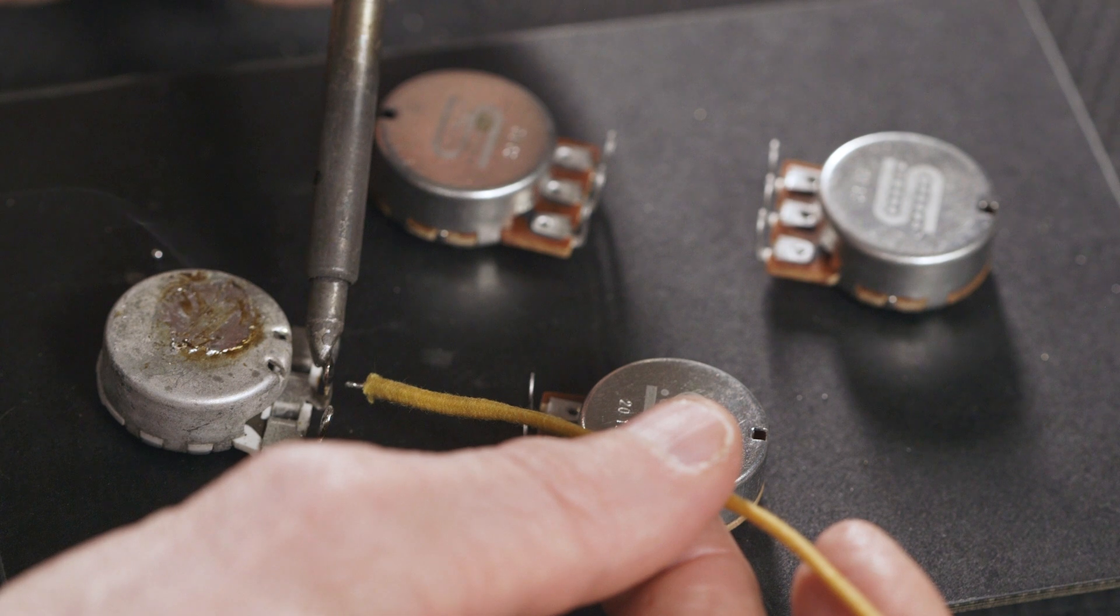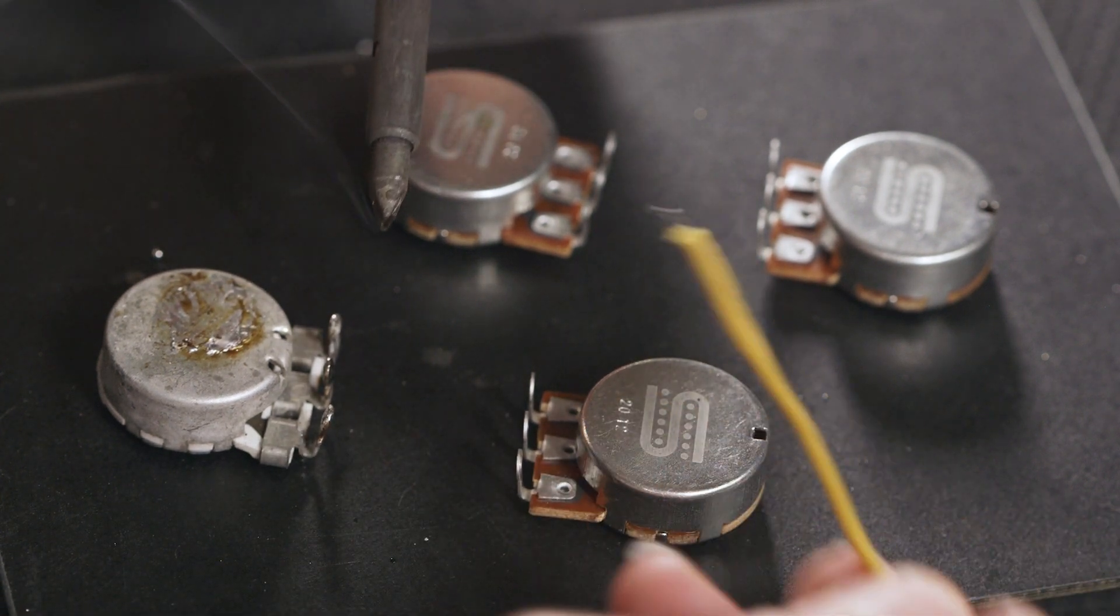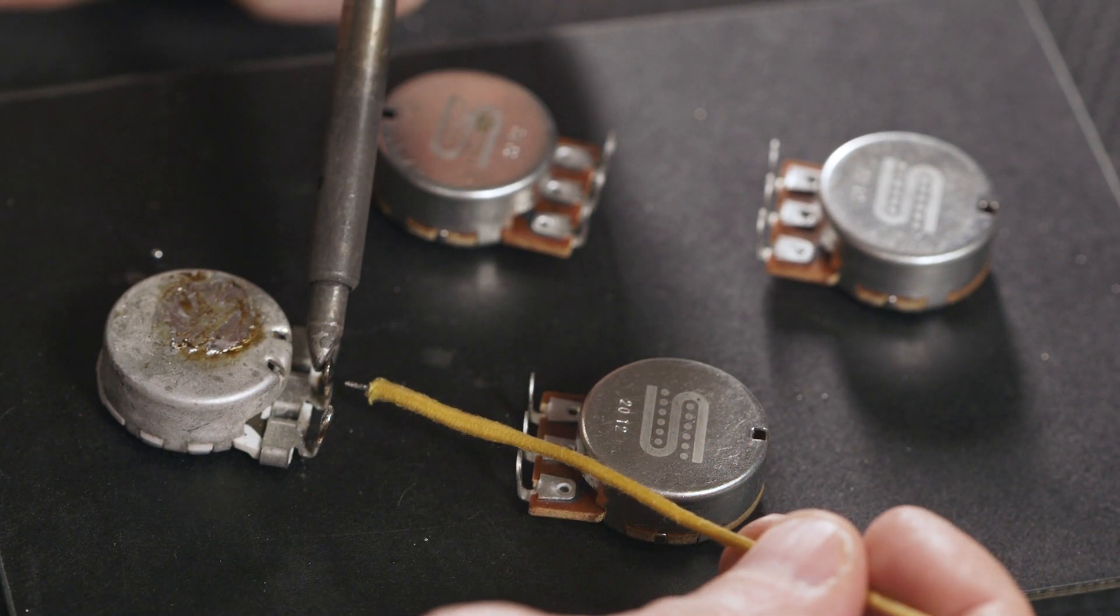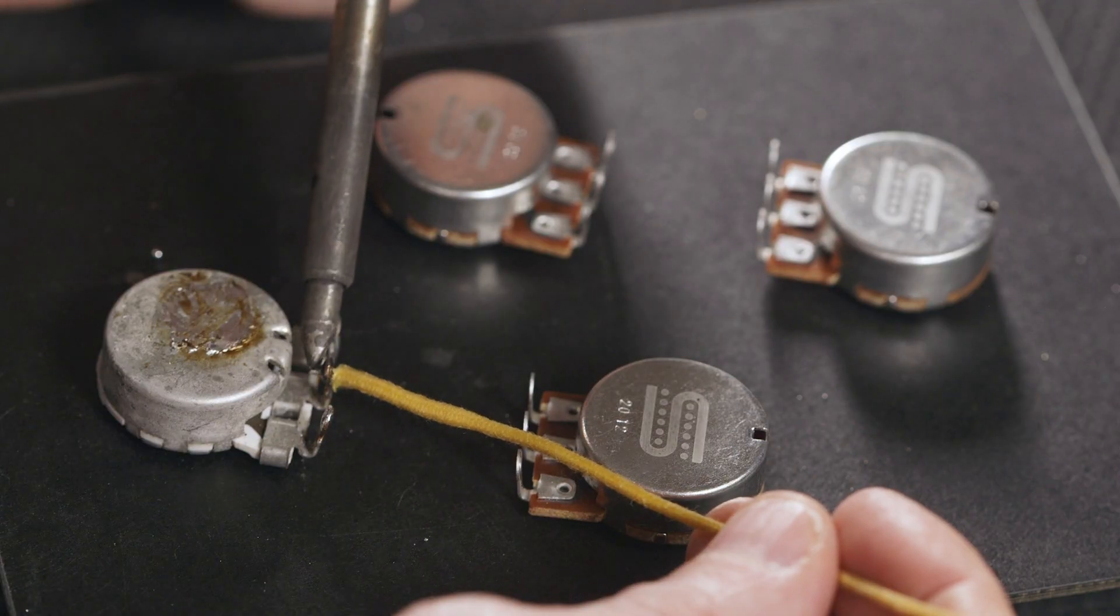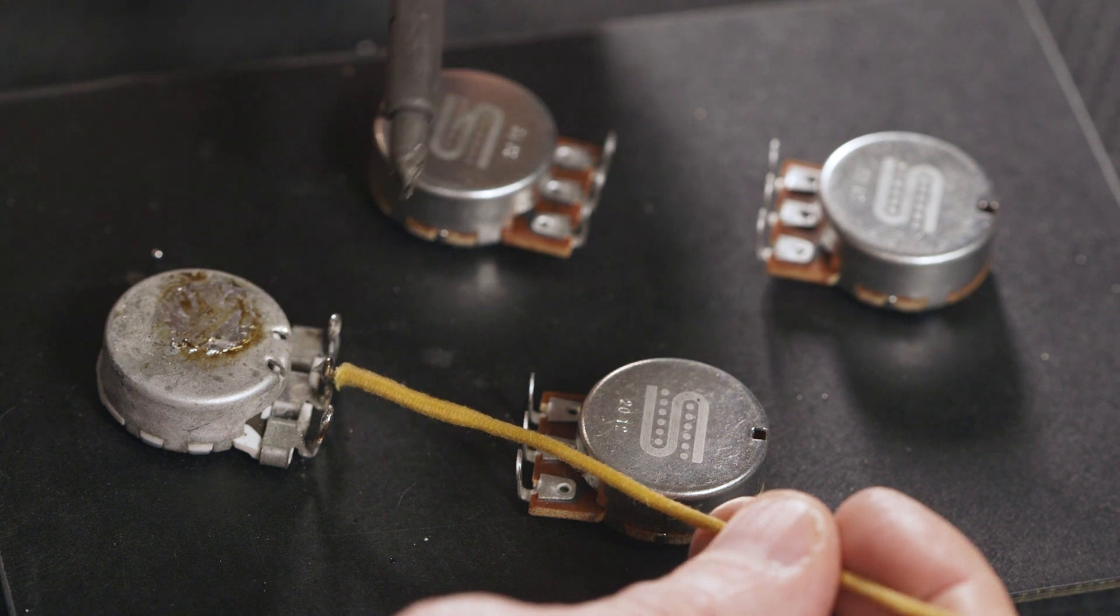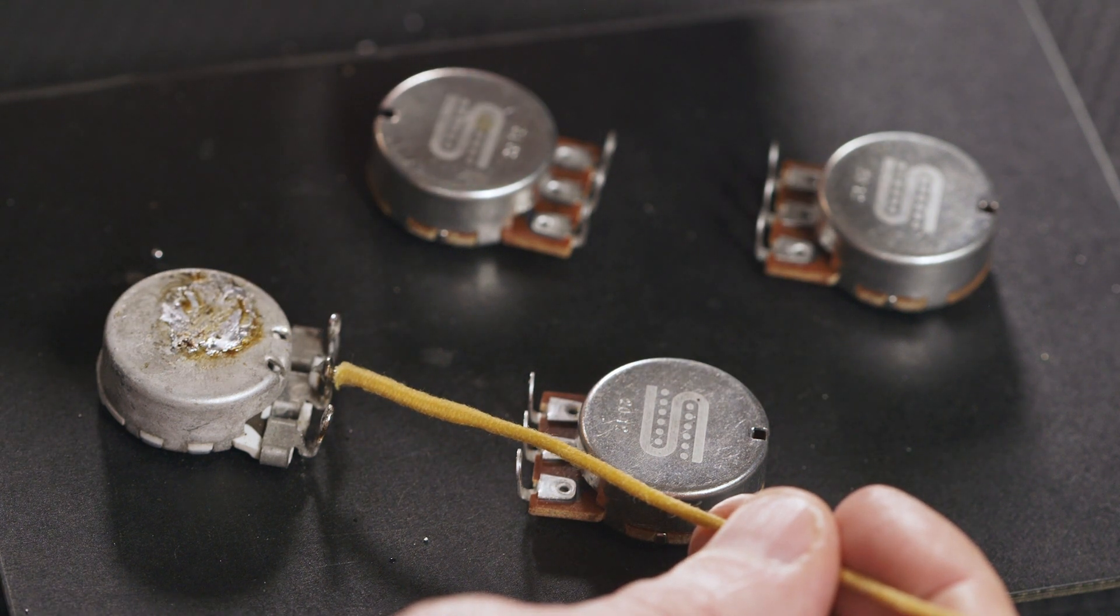Once that lug gets nicely hot and starts to melt, I can actually feed that wire right through the middle, making sure that the wire also is getting heated up again so it bonds.